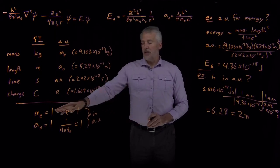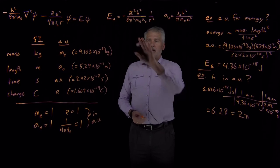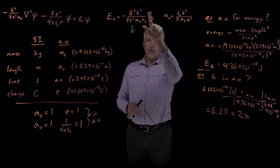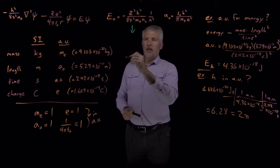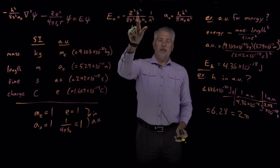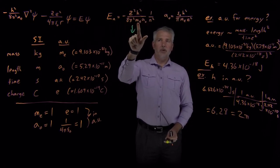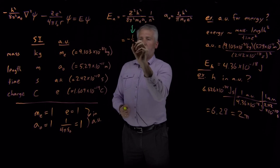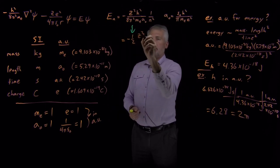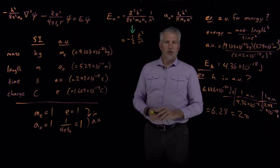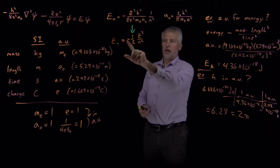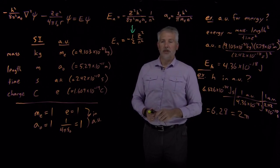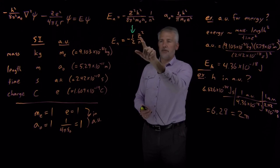By making that convenient set of definitions, rather than writing the energy as a large collection of constants times 1/n², everything simplifies. Since h = 2π, h² = 4π², which almost cancels the 8π² in the denominator; m = 1 and a₀ = 1. What remains — with a factor of 2 left over — is that the energy is simply minus one-half Z²/n² in atomic units. Before, we wrote that expression times a collection of constants equal to one Hartree, but one Hartree is just one atomic unit of energy, so in atomic units the energy is just −½ Z²/n², period.